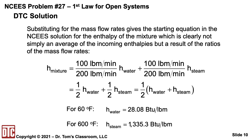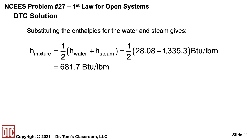From the steam tables in the reference handbook at 60 degrees and atmospheric pressure, h of the water is 28.08 BTUs per pound-mass. Putting those two values in and dividing by two gives h-mixture equal to 681.7 BTUs per pound-mass.